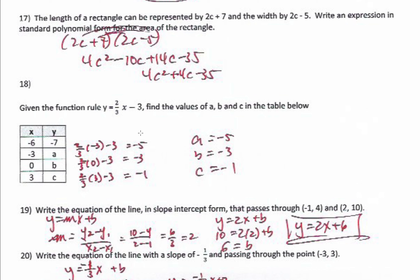The length of a rectangle is represented by (2c plus 7) and the width by (2c minus 5). Area equals length times width, so I multiply (2c plus 7)(2c minus 5). Double distributing: 2c times 2c is 4c squared, 2c times negative 5 is negative 10c, 7 times 2c is 14c, 7 times negative 5 is negative 35. Combining like terms in the middle gives 4c squared plus 4c minus 35.